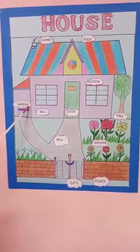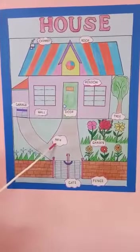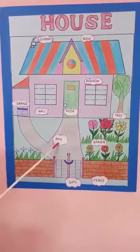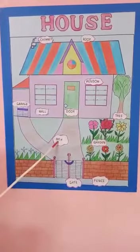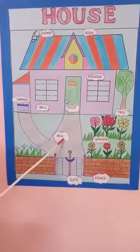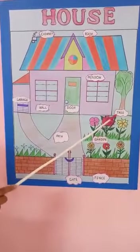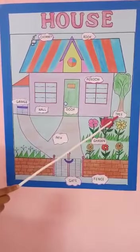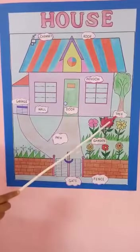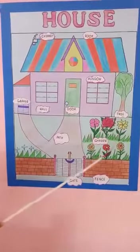Garage. This is the path, where we walk. P-A-T-H. This is tree. T-R-E-E. Tree. This is our garden.